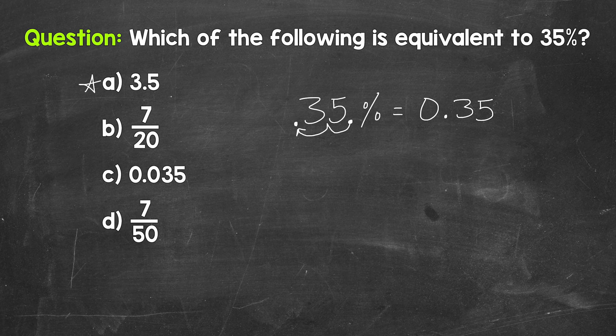Now, looking at our choices, A is a decimal and C is a decimal, but they are not the correct answer. So we can cross off A and C. Now let's convert 35% to a fraction.